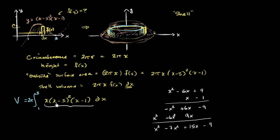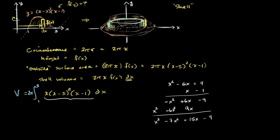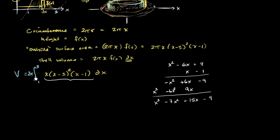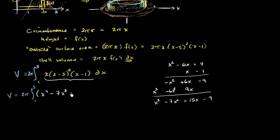So we just multiplied (x - 3)² times (x - 1), and then we have to multiply that times x, essentially raising the degree of each term. Our original integral simplifies to 2π times the definite integral from 1 to 3 of x⁴ - 7x³ + 15x² - 9x dx.